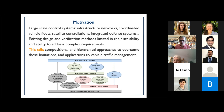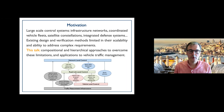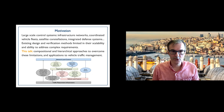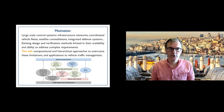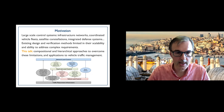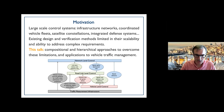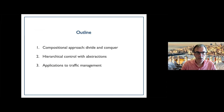The traditional design and verification methods in control theory are rather limited in how far they can scale to large systems. Early results deal with verifying properties such as stability, tracking, and some forms of performance, but not the more complex requirements we encounter today. As a motivating application, I'll be talking about vehicle traffic management, which involves many layers: vehicle-level control, road-link-level control with signal timing, and network-level routing.